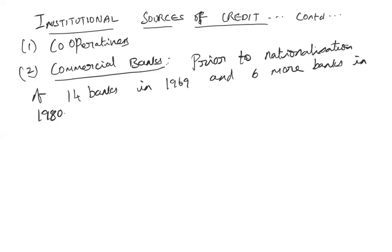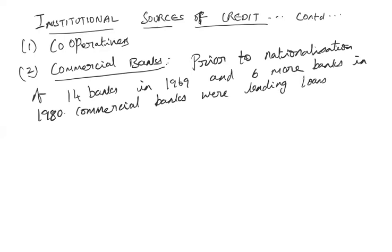Fourteen banks were initially nationalized by the government in 1969, and six more banks were taken over by the government in 1980. They all became public scheduled banks, coming under the public sector. Before nationalization, commercial banks were mainly lending loans for industrial purposes.